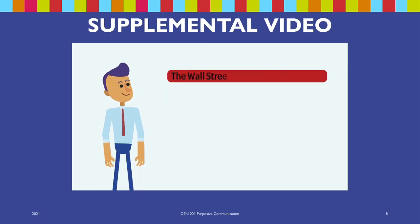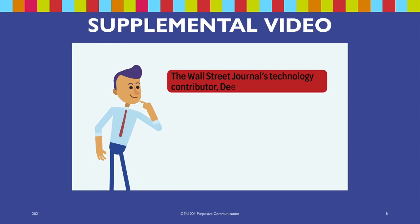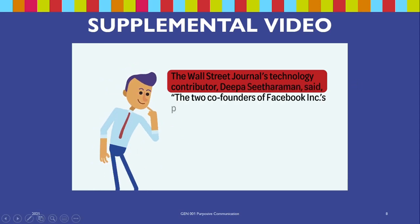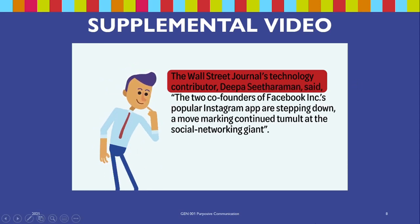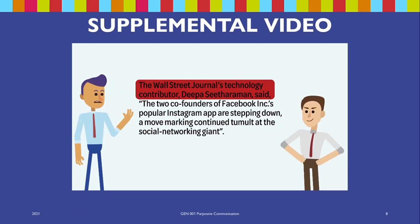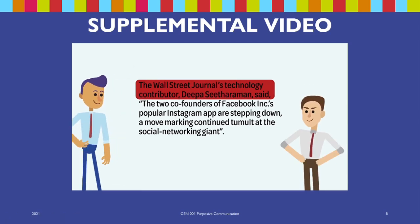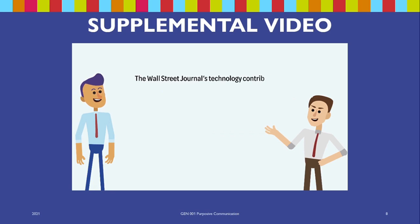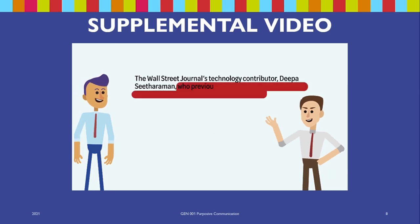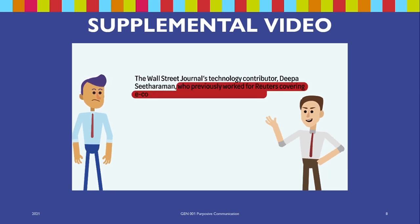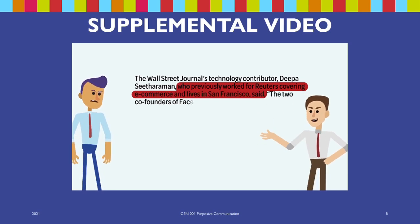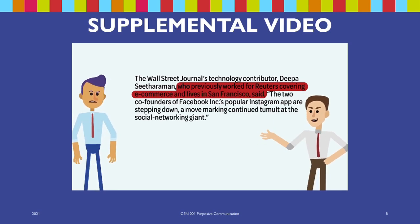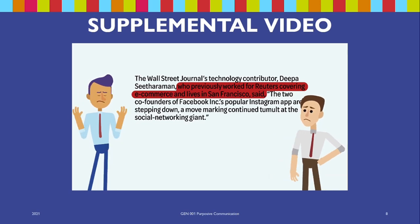Here we signal Deepa Sitaraman's credibility with this introductory phrase: 'The Wall Street Journal's technology contributor Deepa Sitaraman said.' If you have more information about the source that will help support your point, insert that information, but don't go overboard. For example, including that she 'previously worked for Reuters, covering e-commerce, and lives in San Francisco' is too much and not pertinent and should not be included.